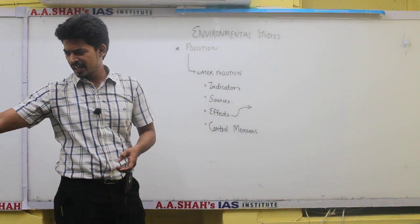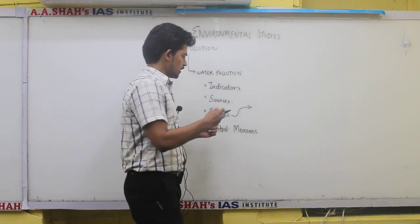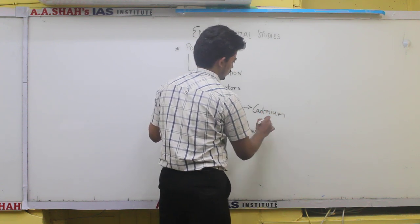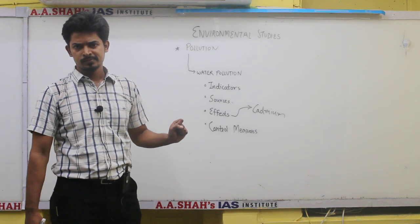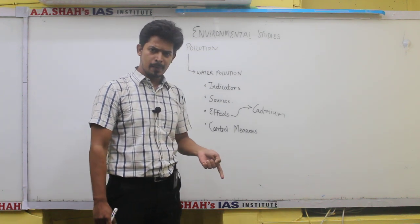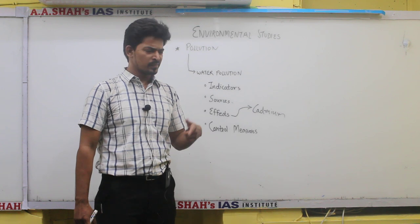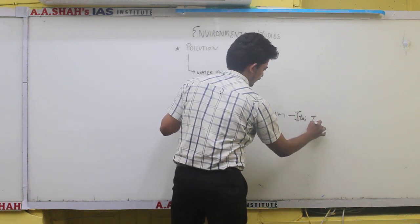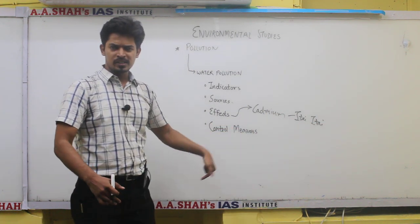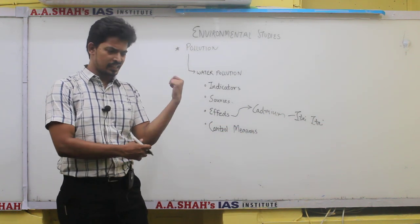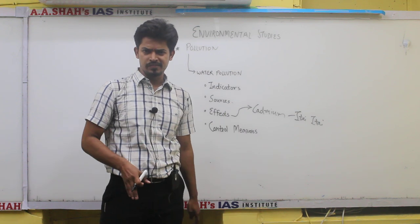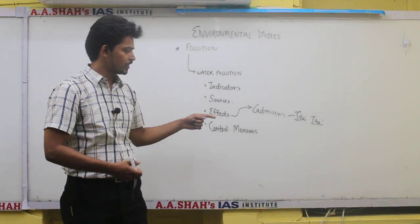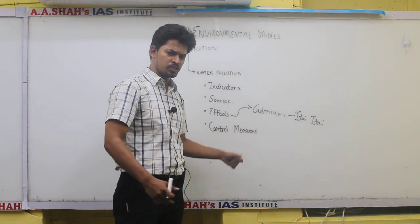Then, there are certain other elements which we find in the water. One is cadmium. Cadmium is a carcinogen. Once cadmium gets ingested into the body, it causes a disease known as itai-itai in Japanese. Cadmium gets lodged into joints and makes movement very difficult. Itai-itai means pain in Japanese, which is caused due to cadmium poisoning.